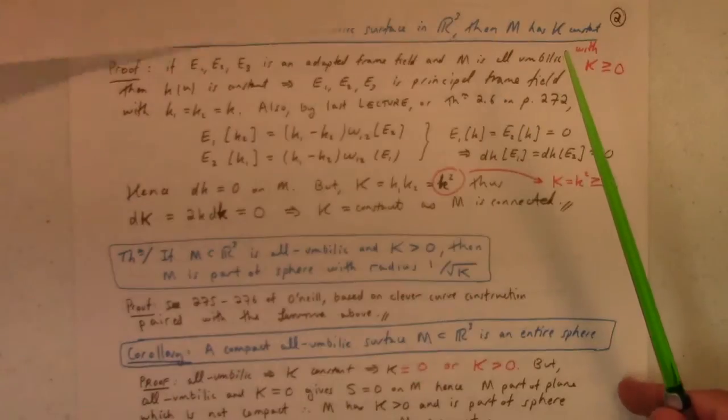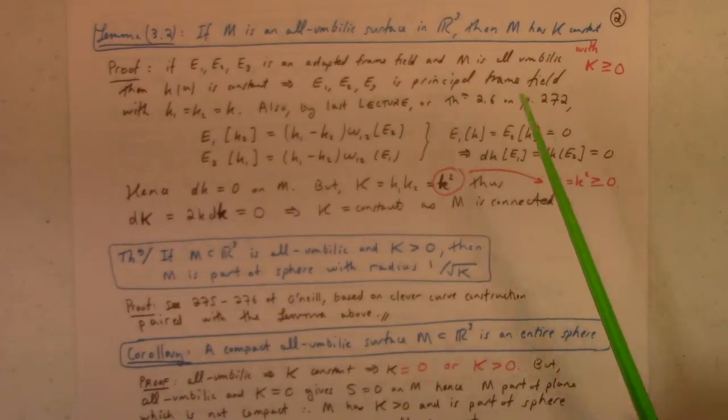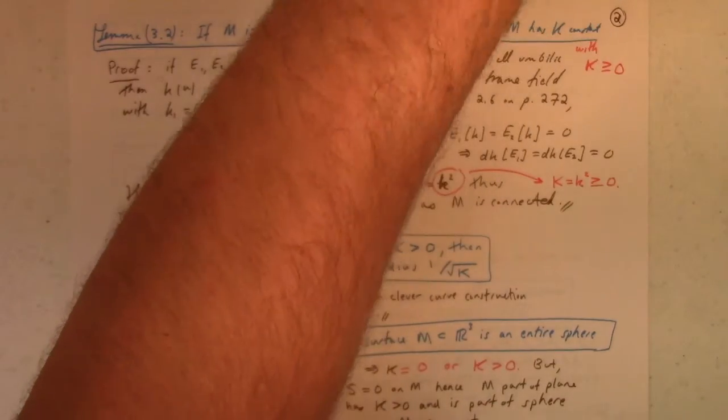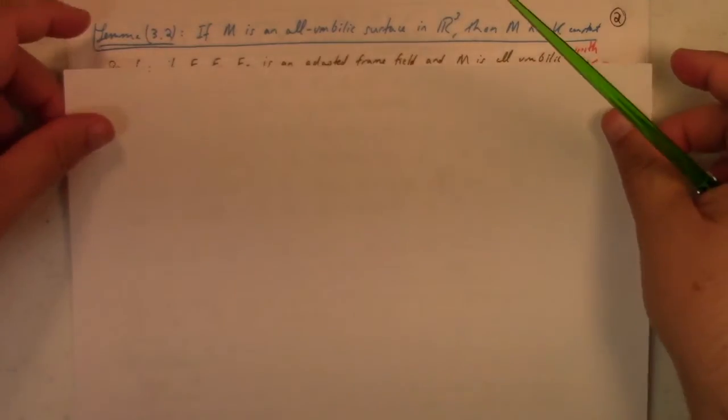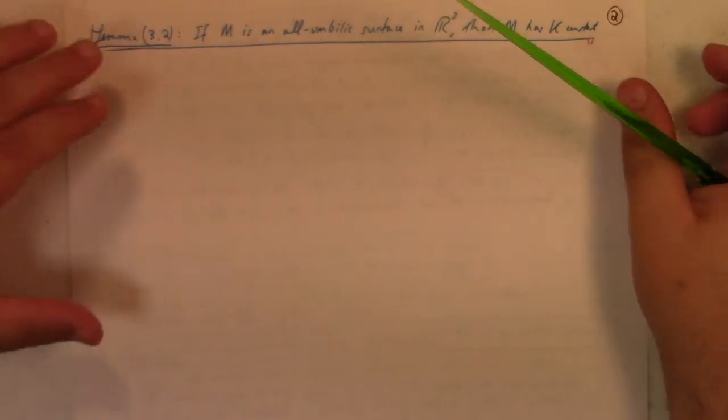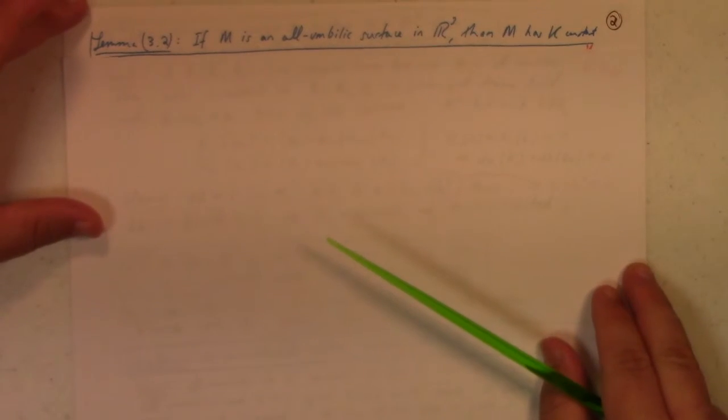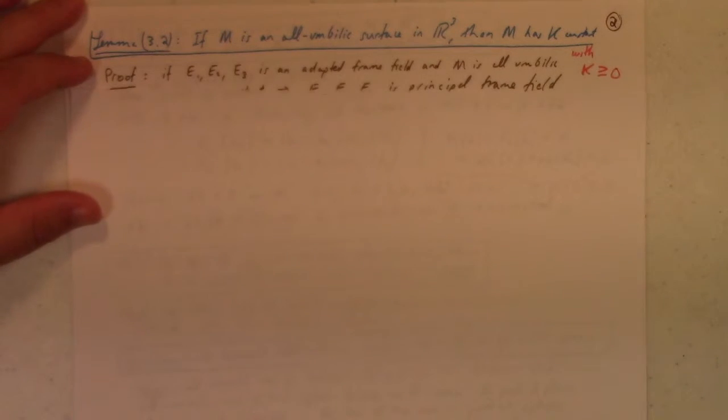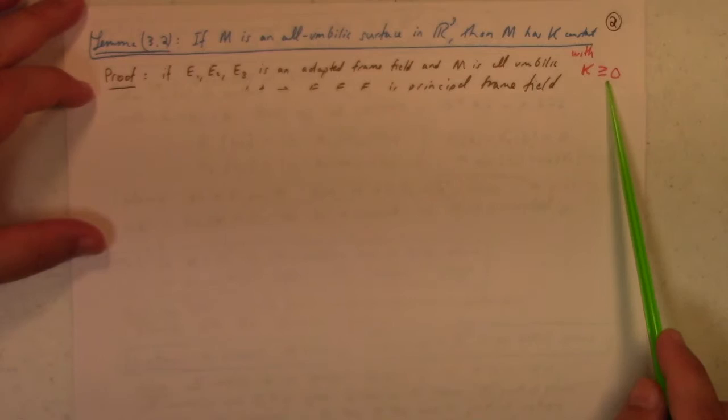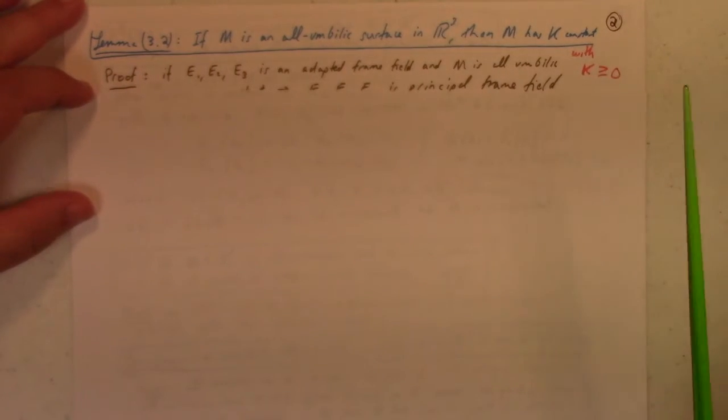All right, moving on, moving along here. Theorem, excuse me, Lemma 3.2, I've lost my cover paper. Where did my cover paper go? Otherwise I get distracted. If m is an all-umbilic surface in R3, then m has constant Gaussian curvature, and with non-negative Gaussian curvature.